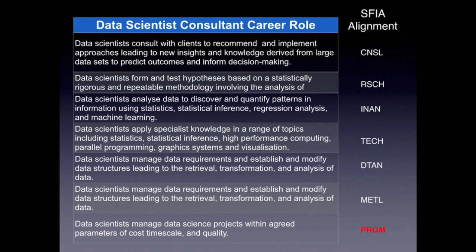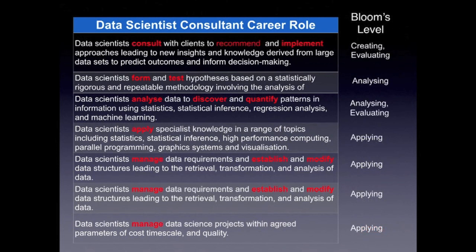It should be noted that the ACS accreditation process requires at least one skill to be developed at SFIA level 3 or greater. In this instance, however, the SFIA skills are better positioned at SFIA level 5 and master's level study. Similarly, analysis of the verbs in the learning outcome statements enables the overall Bloom's levels for this program to be identified. The analysis suggests that this program would demonstrate cognition at the application level and higher — that is, cognition that requires applying, analyzing, evaluating, and creating.